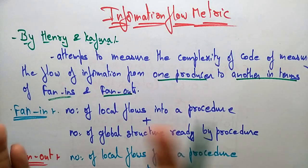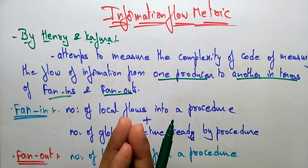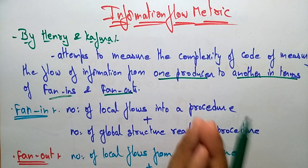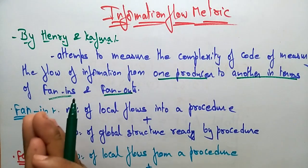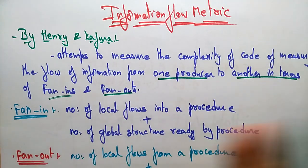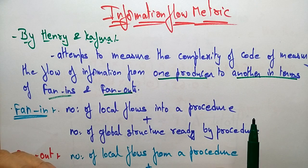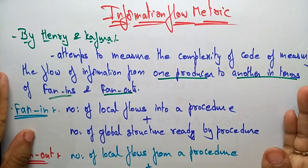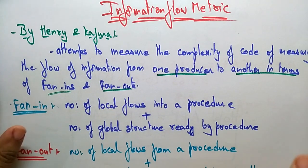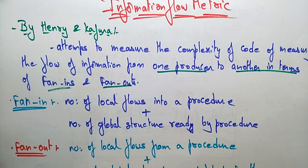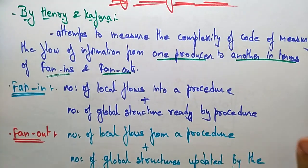These two persons calculated the flow of information from one procedure to another — one procedure sending information, another procedure receiving it. The attempt is to measure the complexity of code by measuring the flow of information from one procedure to another, calculated in terms of fan-ins and fan-outs.